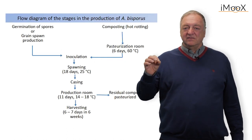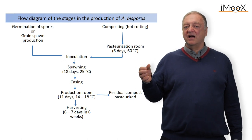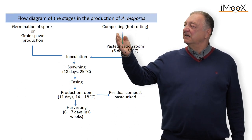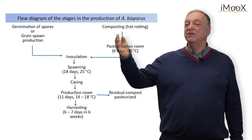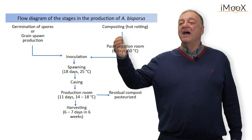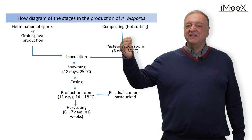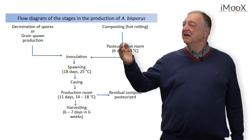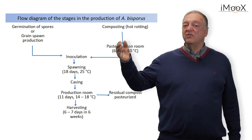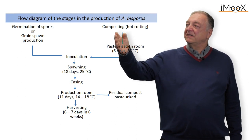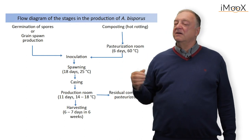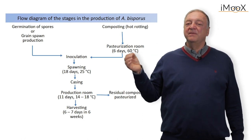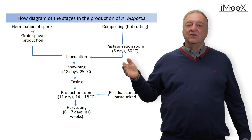Looking at the flow diagram for the production of Agaricus bisporus, there are two different starting points. One is the nutrition for the fungi — the compost, which is produced from wheat straw and horse manure. With this mixture, a hot rotting is done, so the composting process occurs at higher temperatures. After composting, pasteurization is done at 60 degrees centigrade for a prolonged period. The second important step is the germination of spores, which serves as the inoculum. These germinated spores are then mixed with the pasteurized compost and inoculated.